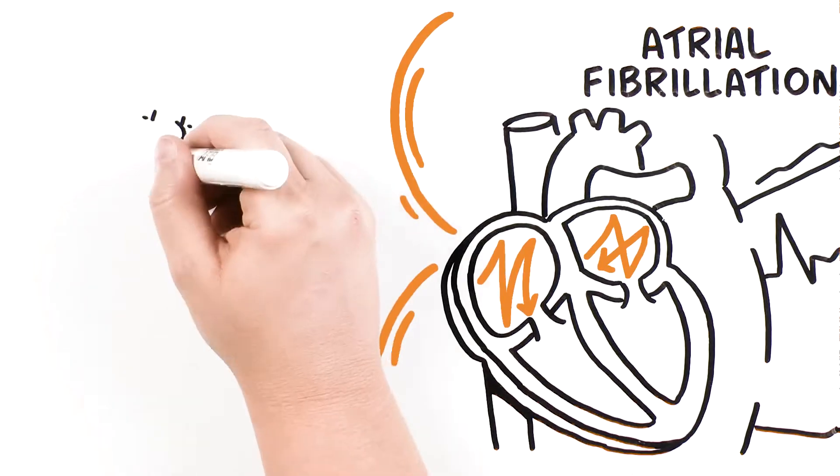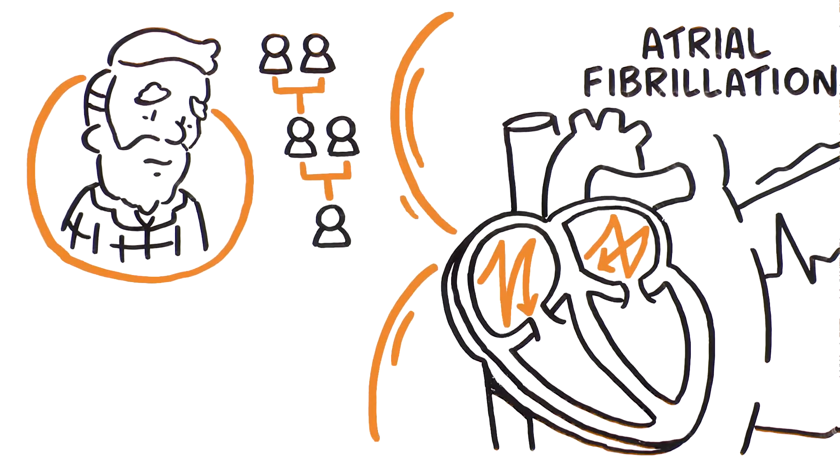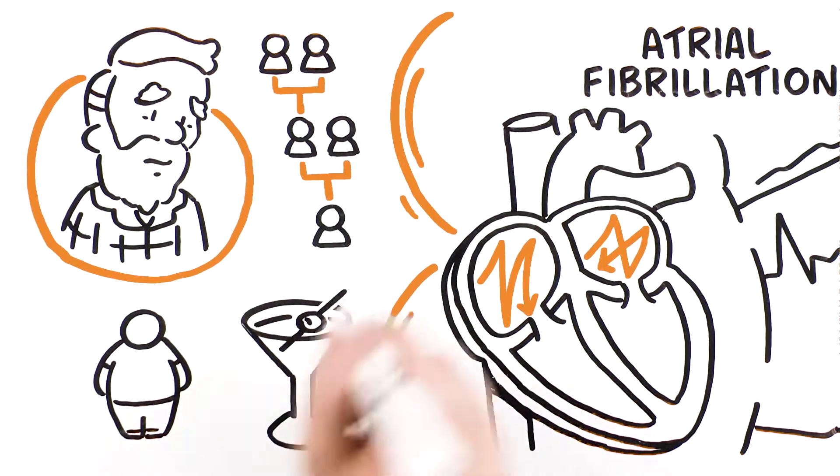AFib may be caused by a wide variety of risk factors such as age, family history, obesity, and other lifestyle factors.